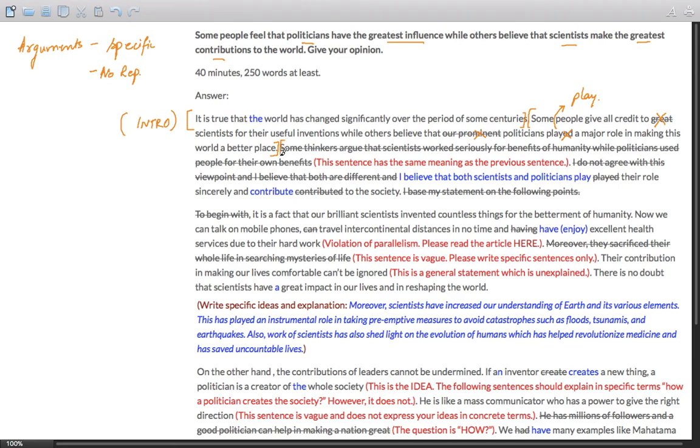The problem begins with the next sentence. It seems as if it is a repetition of the previous one. Some thinkers argue that scientists work seriously for the benefit of humanity. So this is same as making inventions. There is no need of writing this - work for the benefit of humanity. You are merely repeating the idea in different words, while politicians use people for their own benefits. This is a negative statement.